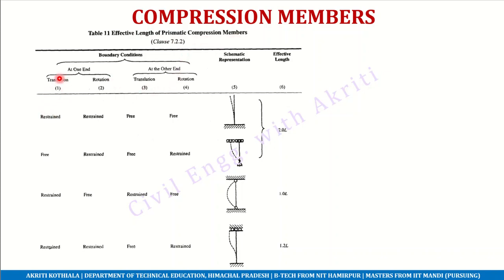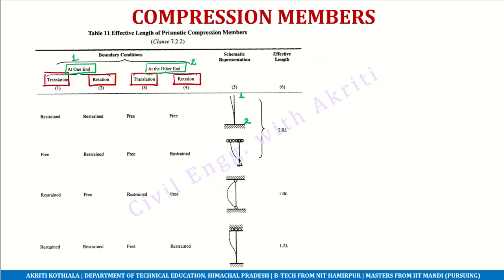From Table 11, you simply look at the end conditions or boundary conditions. Two types of movements are considered: translation and rotation. For both ends, we check how much freedom or restraint is provided for translation and rotation. The table directly gives the K value multiplied by L as the effective length — for example, 2.0 times L, meaning effective length equals 2L for a particular type of connection.